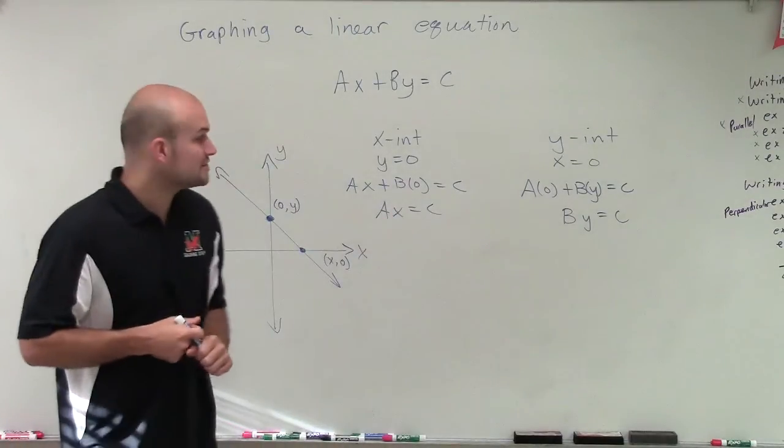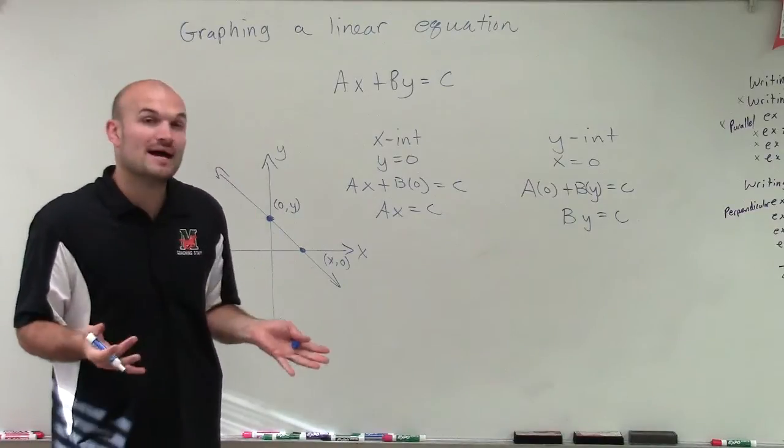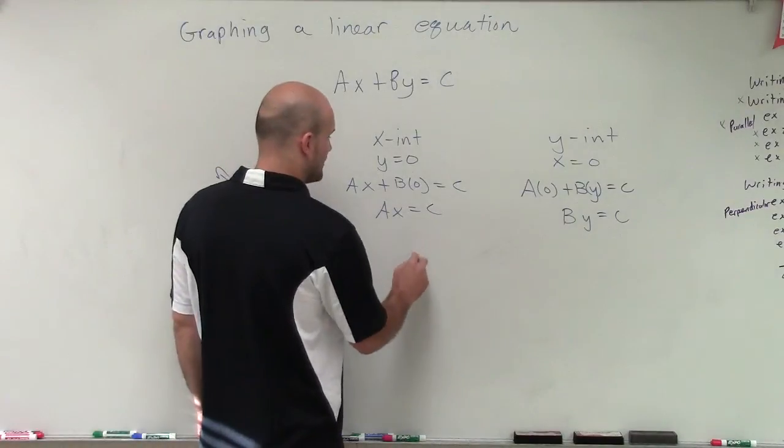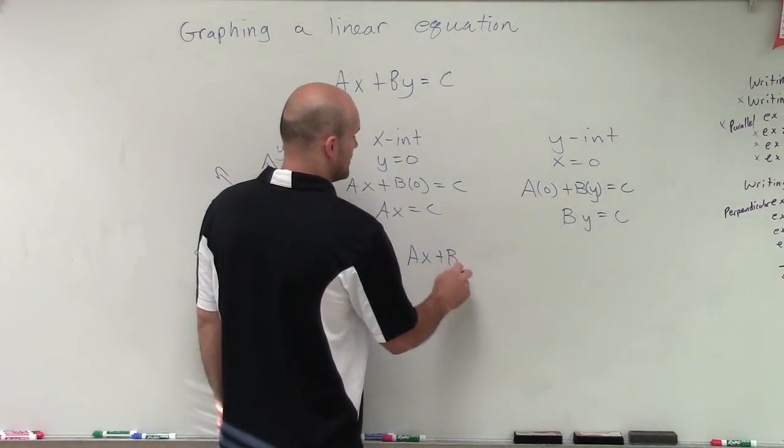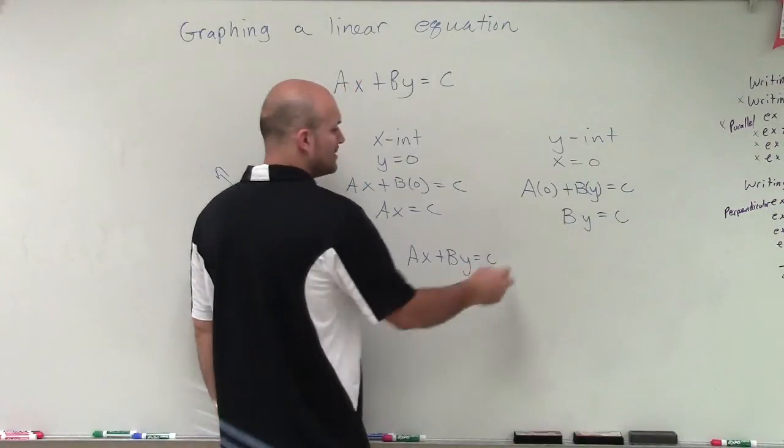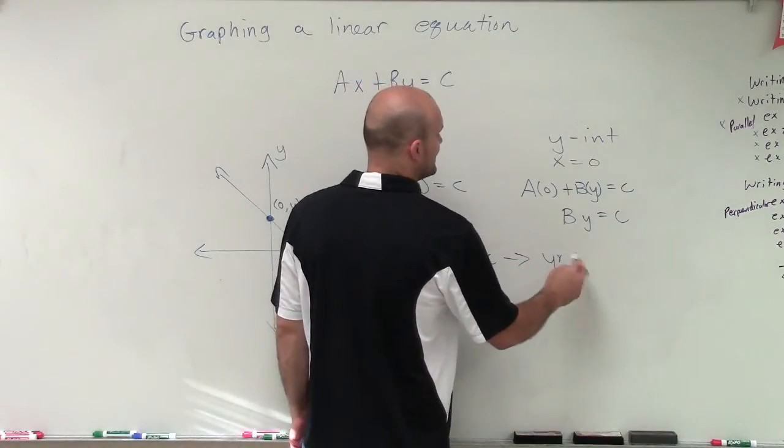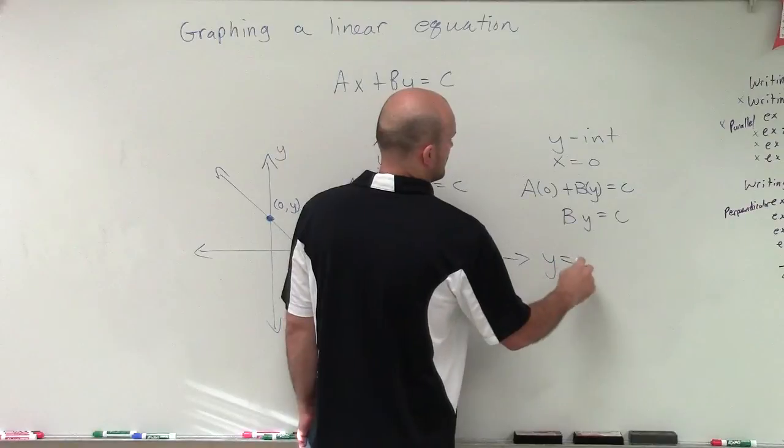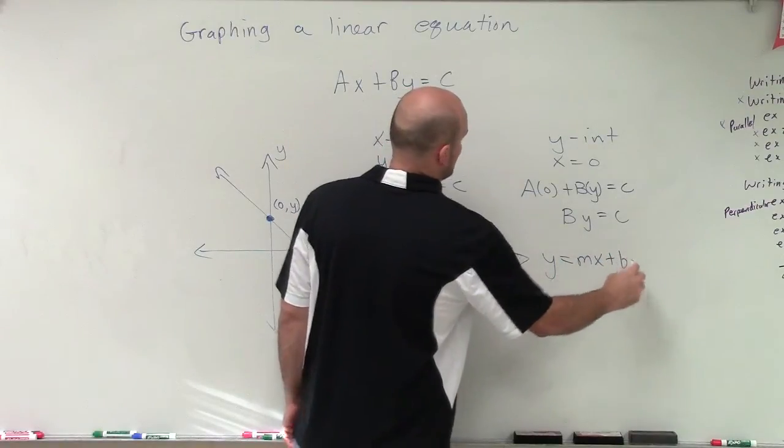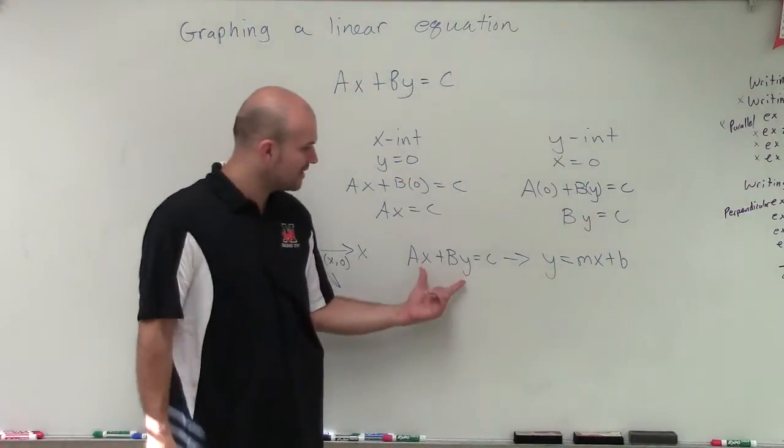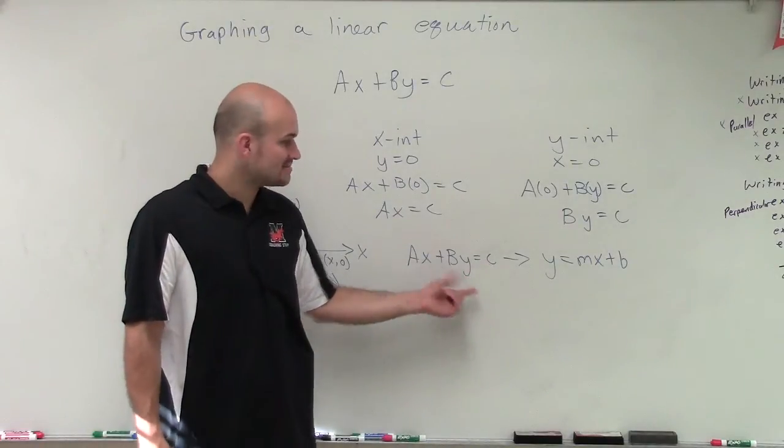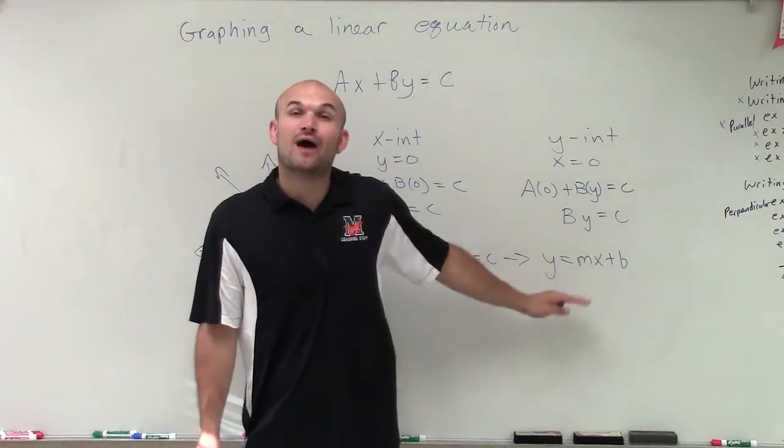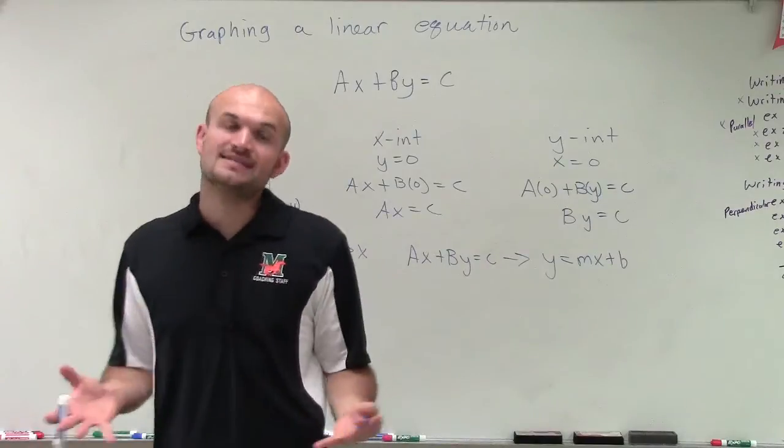The other method that we're going to look into is just going back to slope-intercept form. So if I have an equation that's in Ax plus By equals C, I'm going to want to convert it to y equals mx plus b. And the one thing you need to notice between these two equations is here, I have my x and y variables on the same side, where in this equation, I have my y variable isolated.